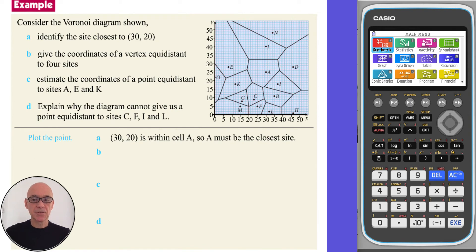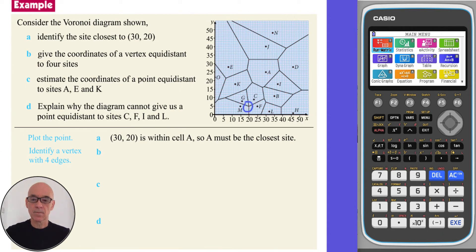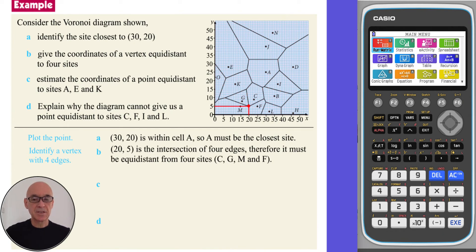In part B, we are asked to give the coordinates of a vertex equidistant to four sites. Identifying a vertex with four edges and then identifying its coordinates, the point (20, 20.5) is the intersection of four edges, and therefore it must be equidistant from four sites.